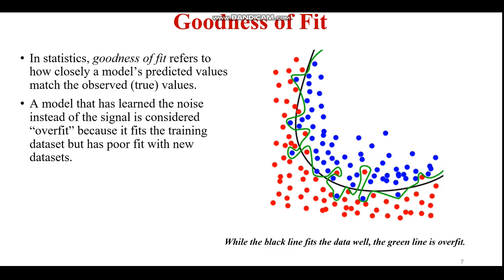In this video we are going to discuss goodness of fit, the best fit line, and then bias and variance — very important machine learning topics. Looking at this diagram, the black line represents the decision boundary, fitting the data well. The green line represents something related to overfitting — it is taking signals out of the class, meaning the model is not properly fitted.